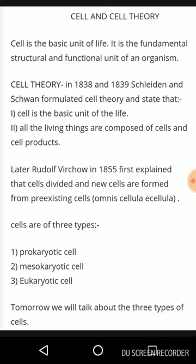Cell theory. In 1838 and 1839, Schleiden and Schwann formulated cell theory and stated that: 1. Cell is the basic unit of life, and 2. All living things are composed of cells and cells' products.